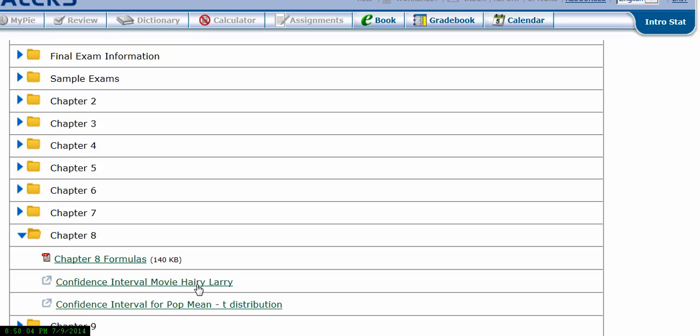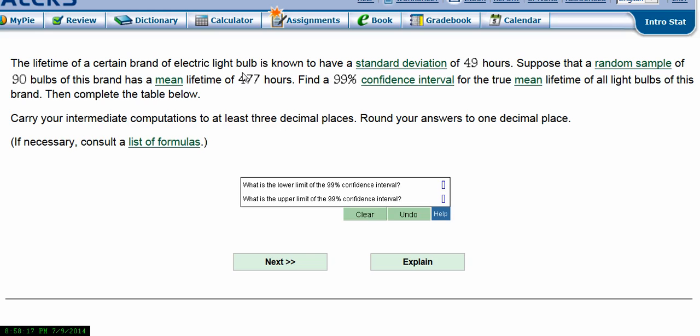However, you could skip watching Harry Larry, but it would just add a little bit more sense to where all this stuff is coming from. But again, I'll go back out to do the problem. So we have here a lifetime of certain brand of electric light bulbs is known to have a standard deviation of 49. Suppose that a random sample of 90 bulbs of this brand has a mean lifetime of 477. Find a 99% confidence interval for the true mean lifetime of all light bulbs of this brand.